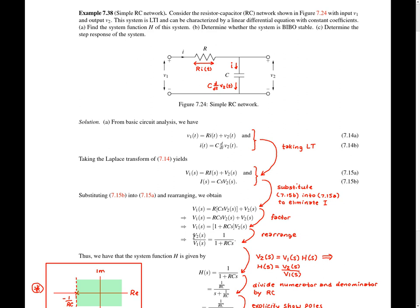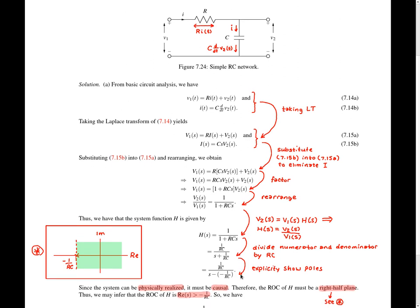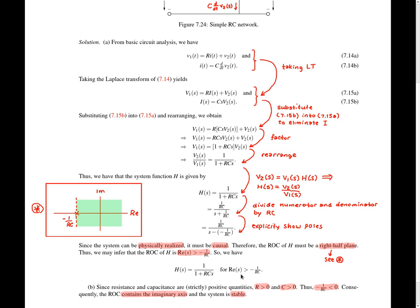At this point, I'm going to pause in order to scroll the example upwards so that we can see the next part of the solution. Continuing from where we left off, we can divide the numerator and denominator by RC, which gives us the next line.